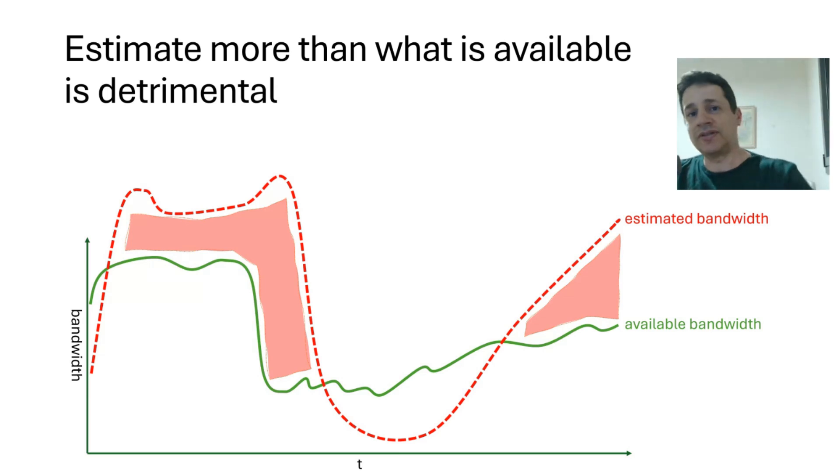And we're going to also oscillate if the estimation algorithm that we have is not good enough, which means that we're going to estimate too much, get into packet losses, then drop the bitrate or the bandwidth estimation, get to a point where we're estimating too little. Again, lost opportunity of being able to use more of the network. And we're going to go back to our estimation gauge. So we're going to oscillate from too low to too high.